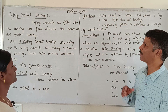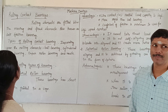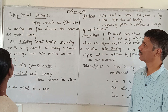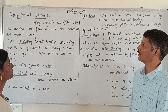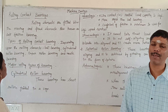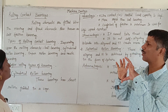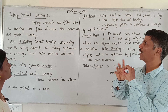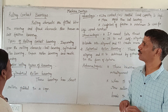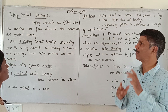What is rolling contact bearing? Rolling elements are fitted between the moving and the fixed elements. This is an anti-friction bearing, consisting of a moving element, fixed element, and rolling element.